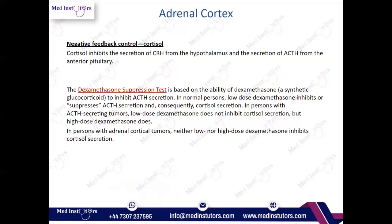In summary: in a person with ACTH-secreting tumors, low-dose dexamethasone does not inhibit cortisol secretion, but high-dose does. In a person with adrenal cortical tumors, neither low nor high-dose dexamethasone inhibits cortisol secretion. When revising this topic, try to memorize these findings and understand the mechanism of the dexamethasone suppression test.